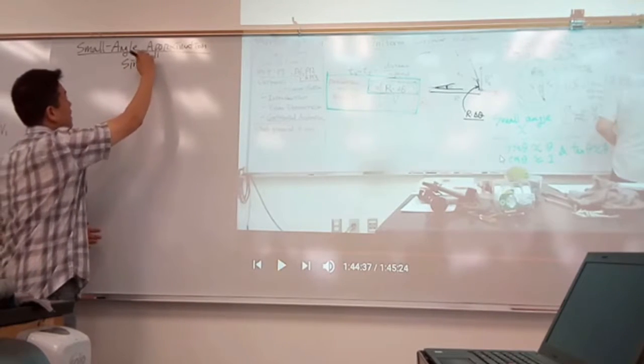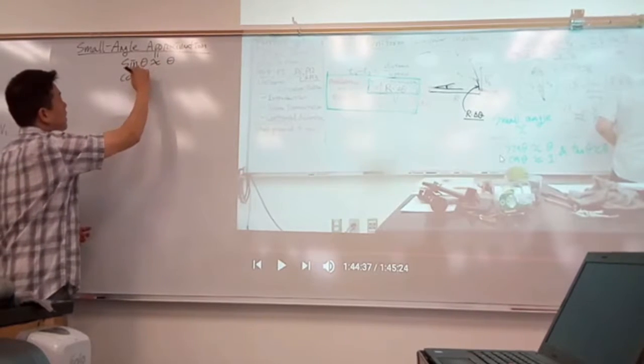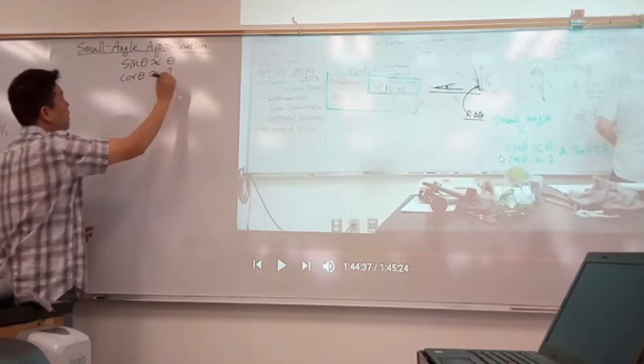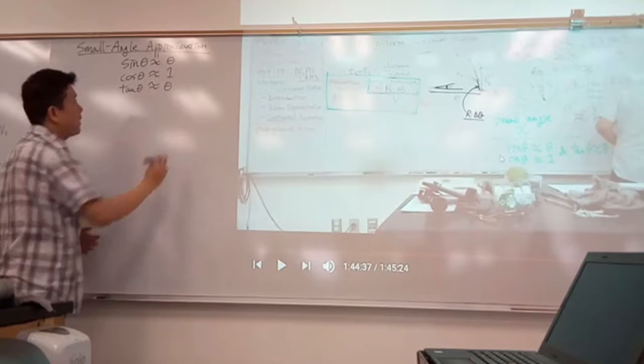That sine of theta is approximately theta, cosine of theta is approximately one, and tangent theta is approximately theta again.